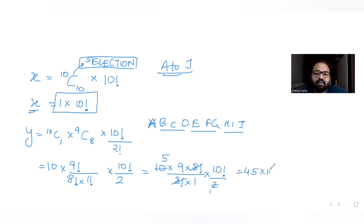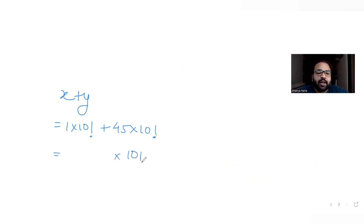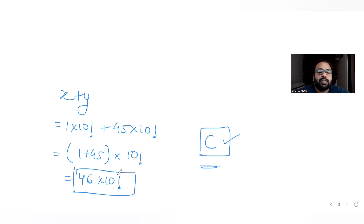Now X + Y = 10! + 45 × 10! = 10!(1 + 45) = 46 × 10!. According to the given options, the correct answer is option C, which is 46 × 10!.